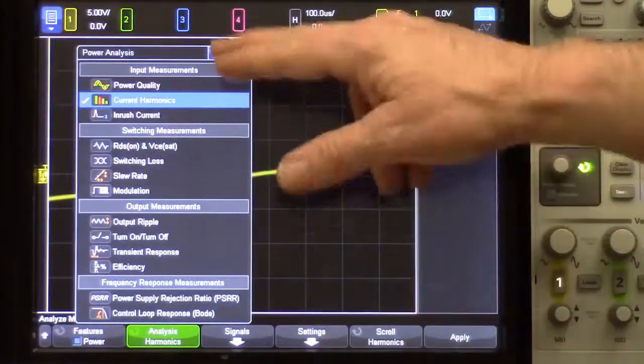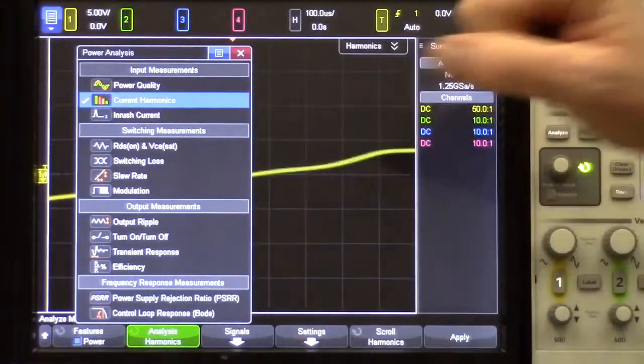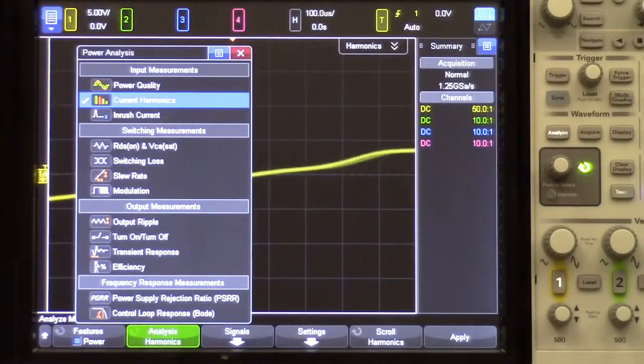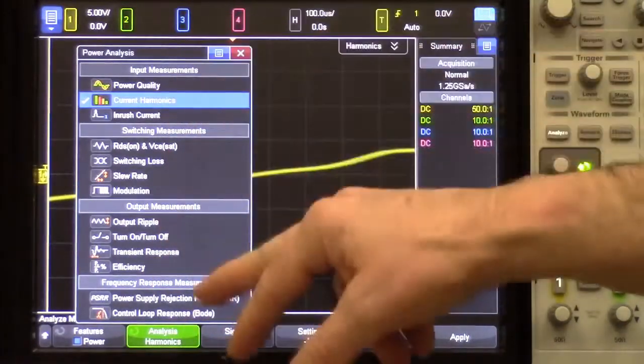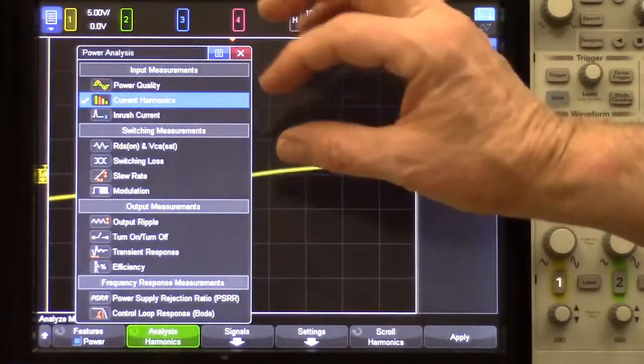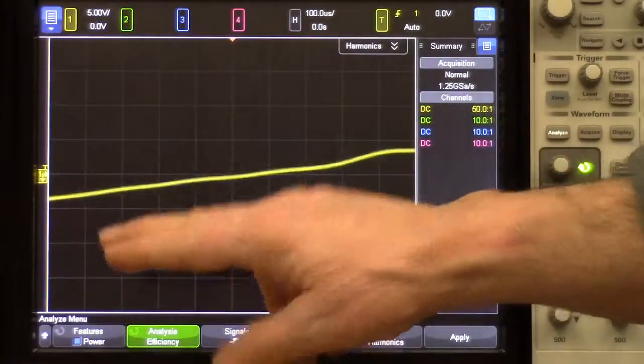Then if I select analysis, you can see a list of all the measurements this oscilloscope can perform with the power option. The one we're interested in is efficiency, but if you're interested in any of these others, we have videos on all of these. So let's select efficiency.